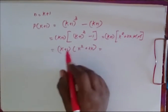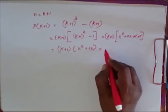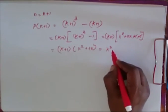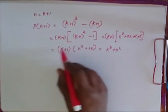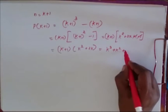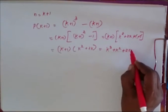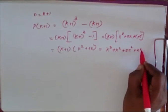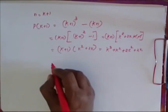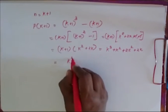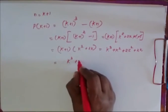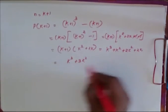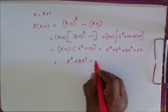The plus 1 and minus 1 cancel, and I have (K plus 1) into (K squared plus 2K). Now I simplify this: I get K cubed plus K squared plus 2K squared plus 2K, which is K cubed plus 3K squared plus 2K.